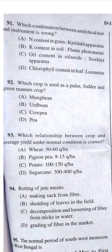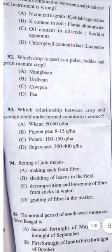Question 92: Which crop is used as pulse, fodder, and green manure crop? Obviously C — cowpea. Question 93: Which relationship between crop and average yield under normal conditions is correct? Answer A — wheat 5–6 ton per hectare or 50–60 quintal per hectare.